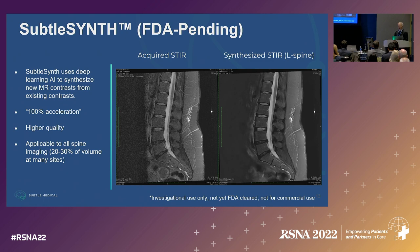We've started out with synthesizing STIR images of the spine from sagittal T1 and T2-weighted images. The reason we get higher quality — as you can see in this picture with the acquired STIR on the left and synthesized STIR on the right — is that STIR is naturally a low-SNR technique because you have to do an inversion pulse to knock down the fat signal. But if you're using two high-SNR T1 and T2 sequences to build it, you actually get improved image quality.